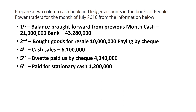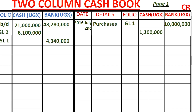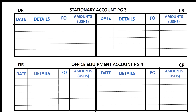On 6th, paid for stationery in cash $1,200,000. When we pay for stationery, cash reduces. Reductions in cash are credited, so we credit the cash column in the cash book with $1,200,000. The stationery expense account is found in the general ledger on page three. Stationery is an expense and all expenses increase by debiting, so we debit the stationery account with $1,200,000. Cash is on cash book page one.